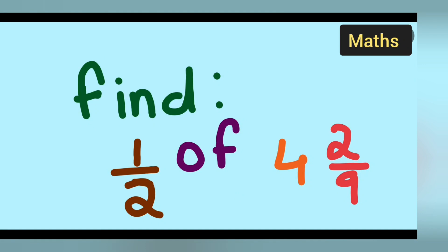Welcome for today's class of mathematics. Today's question is find 1 upon 2 of 4 is to 2 upon 9. Now, this of means multiplication sign. This operator is for multiplication and 4 is to 2 upon 9 is in the form of a mixed fraction.